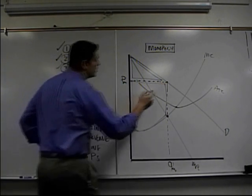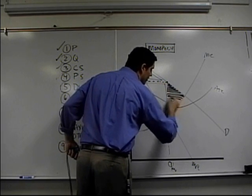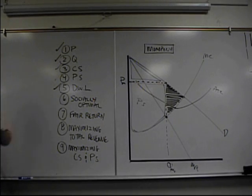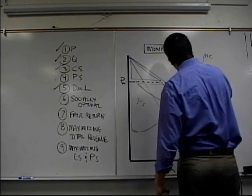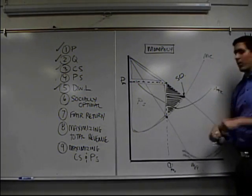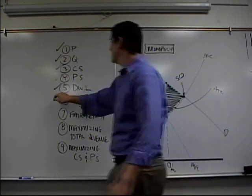Deadweight loss is the lost consumer surplus and the lost producer surplus that used to exist if this was a perfectly competitive firm. It's deadweight loss, check five. Socially optimal is producing right here. This is the amount that is socially optimal, what society deems appropriate. We want that amount produced where basically supply marginal cost hits the demand curve. Check six.